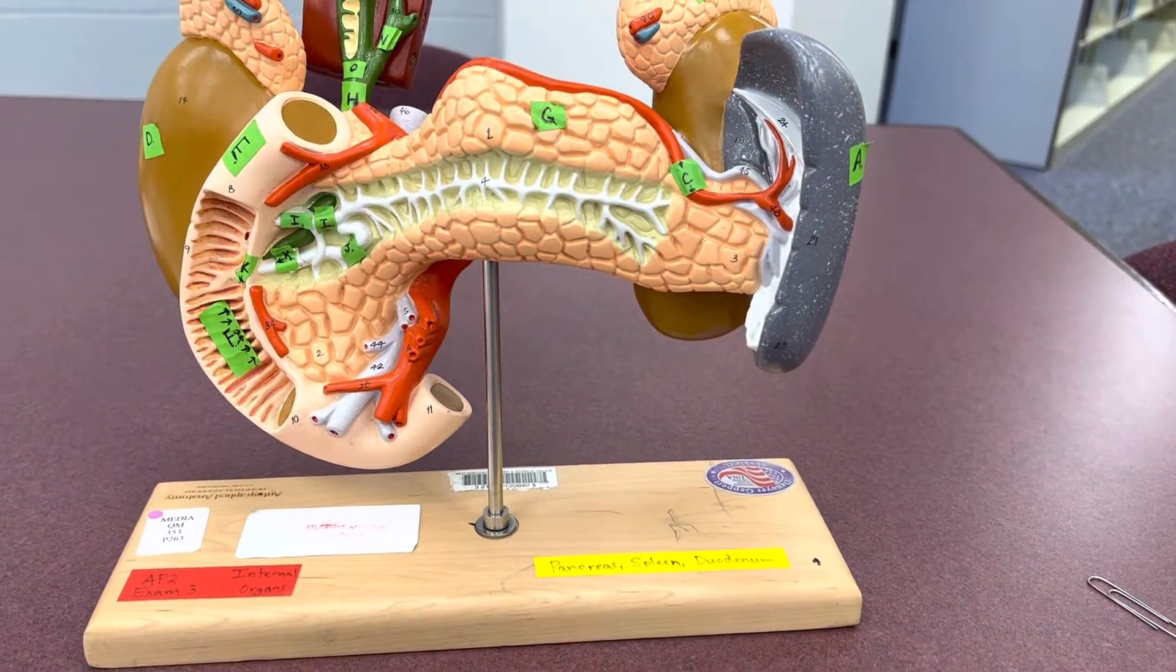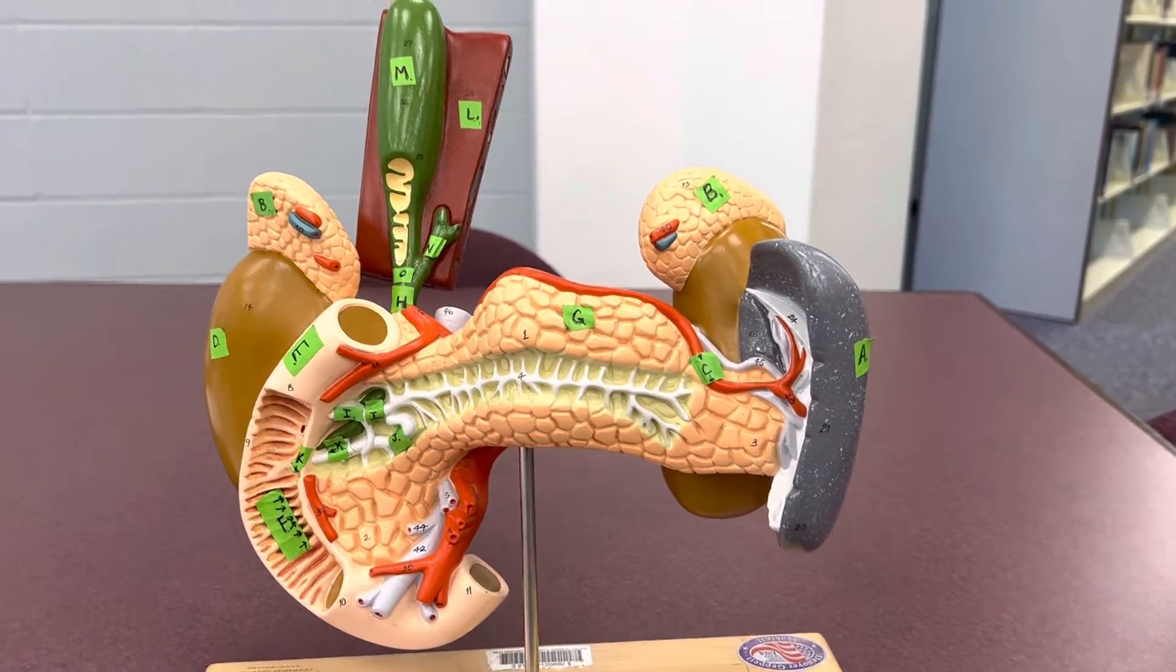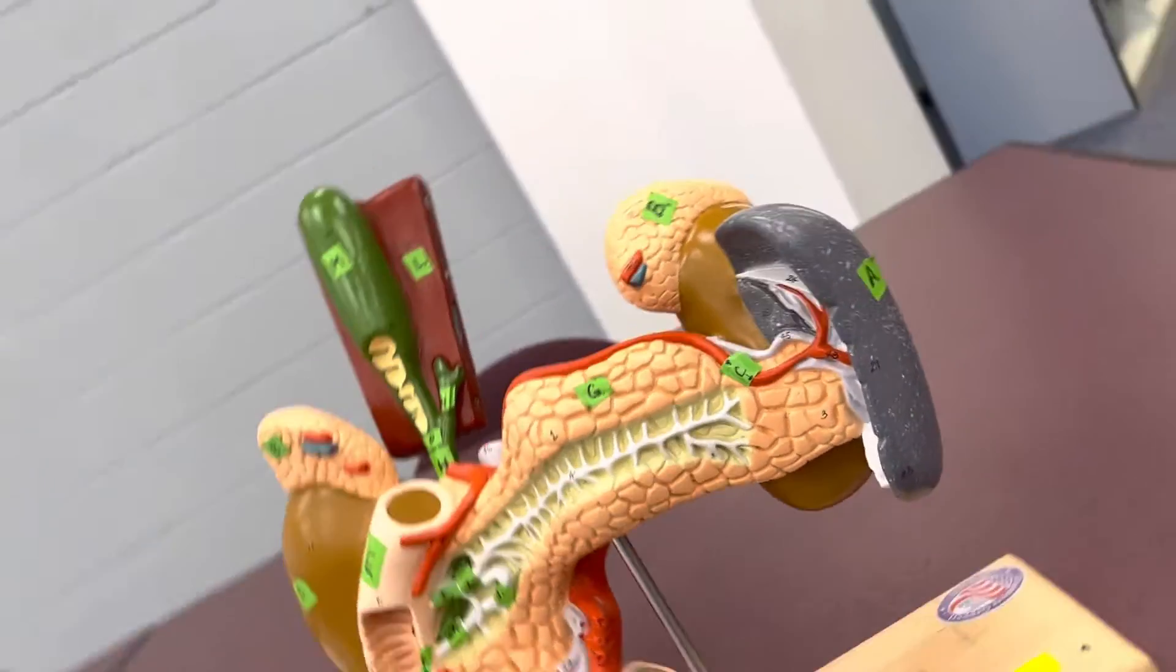Okay, so this is the pancreas, spleen, duodenum model for AMP2, the internal organs. Let's get to it.